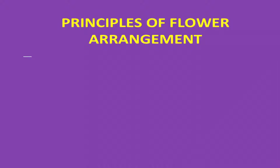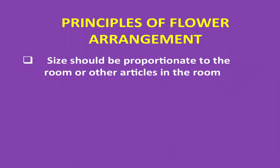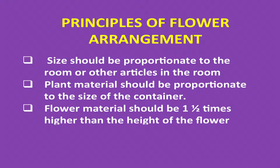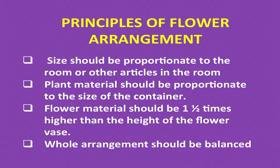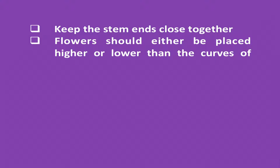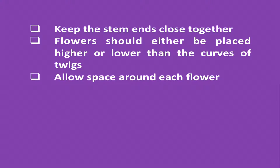We shall discuss the principles of flower arrangement. Size should be appropriate to the room or other articles placed in the room — there should be a uniform balance maintained. Plant materials should be proportionate to the size of the containers. Flower material should be 1.5 times higher than the height of the flower vase. The whole arrangement should look balanced. Keep the stem ends close together. Flowers should either be placed higher or lower than the curves of twigs.